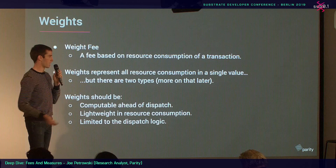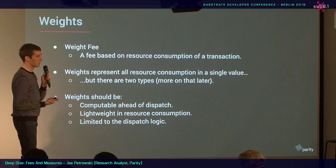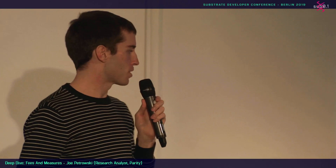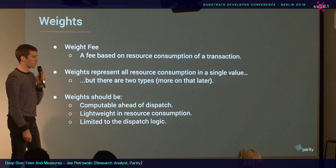There are two types of weights: normal and operational. Weights should have a couple of properties. First, they should be computable ahead of dispatch — we don't have access to the function logic yet, so we have to compute this before dispatching. They should be lightweight, because you don't want heavy computation just to decide how much to charge for computation. And they're limited to the dispatch logic — the weight computation function doesn't have access to runtime variables like how long a list will be.